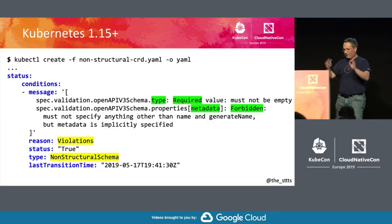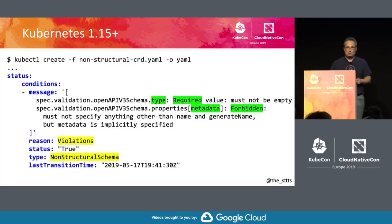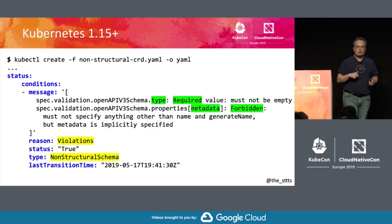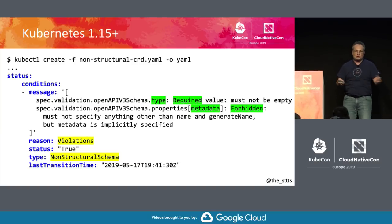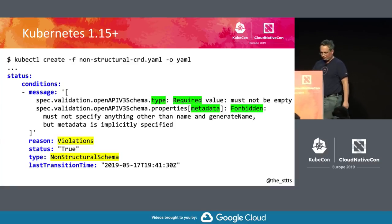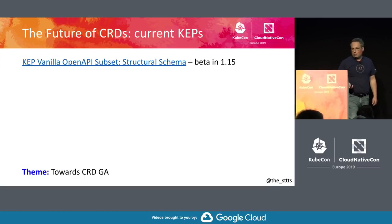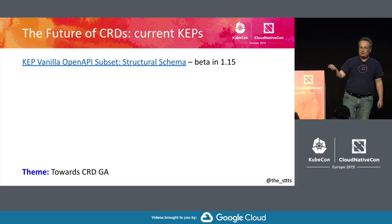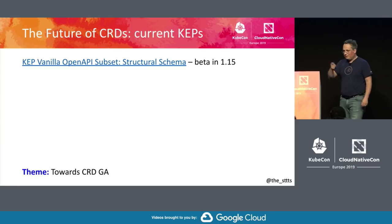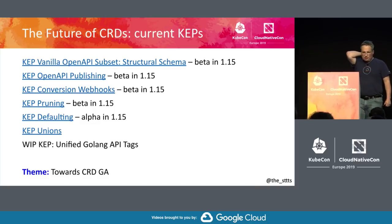Everything keeps working, so don't panic. If anybody fears their special construction doesn't work, I'm open for questions. We have CRD conversion being promoted to beta in 1.15, so even for special cases, conversion is the way out. So much about the motivation and intuition behind structural schema. Here's the KEP — at the moment it's the only documentation, but for 1.15 we will officially document it.